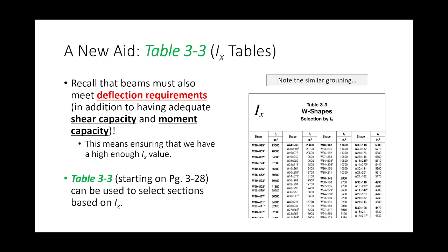You'll start to see why Table 3-3 might be used for design. Beams need to meet three limits: moment capacity, shear capacity, and deflection requirements. It's possible that a beam has more than enough moment capacity, but deflections are governing the design. In that case, you're not going to select your section based off Zx — you're going to select it based off Ix.